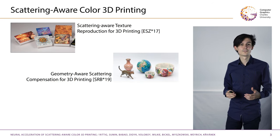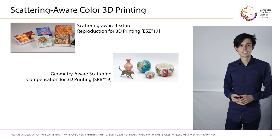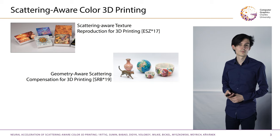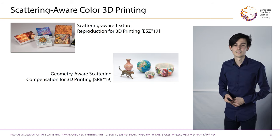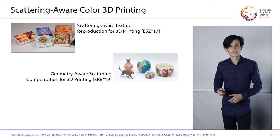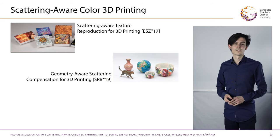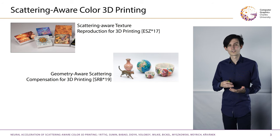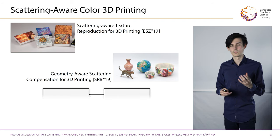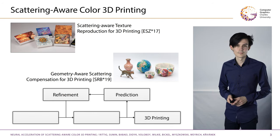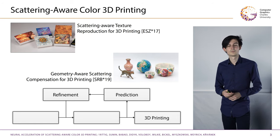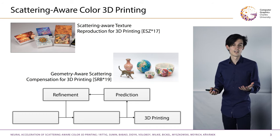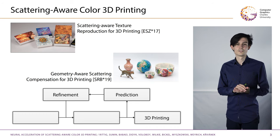We addressed these problems in two previous publications. Scattering-aware texture reproduction for 3D printing pioneered this problem and solved it for planar 2.5D geometry. The follow-up work, geometry-aware scattering compensation for 3D printing, extended this to 3D and solved color crosstalk around thin geometry. Both methods use an iterative optimization loop that continuously predicts the appearance and refines the material arrangement to get a better match to the virtual target.